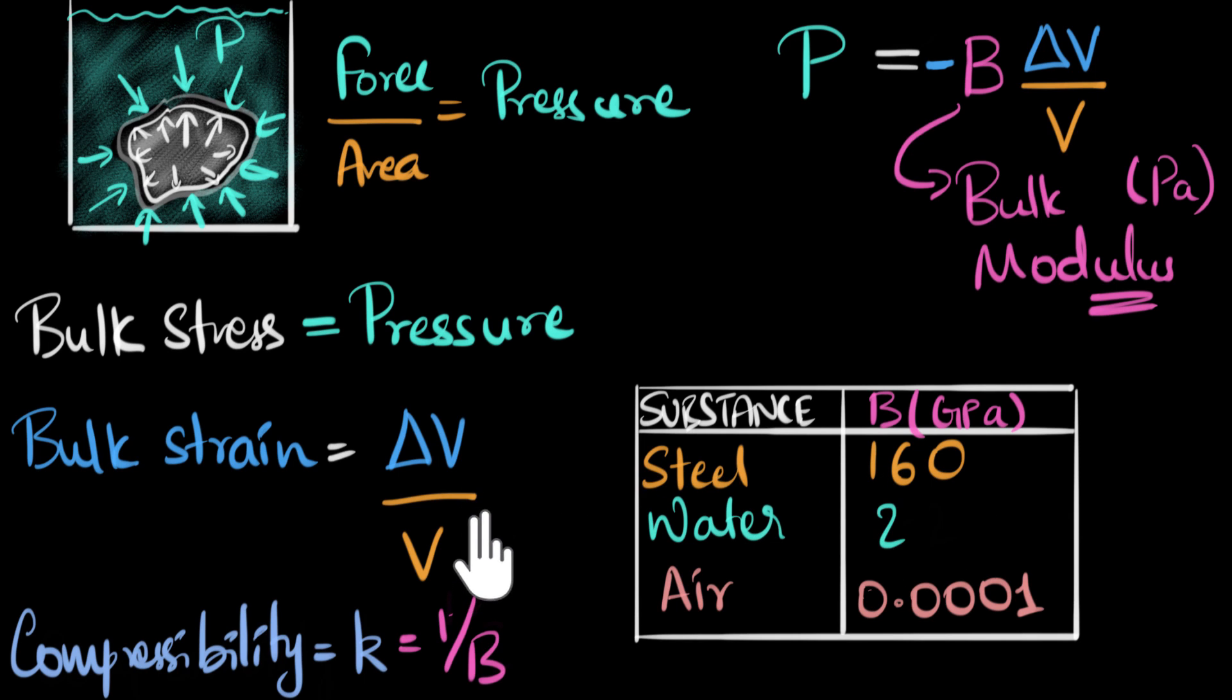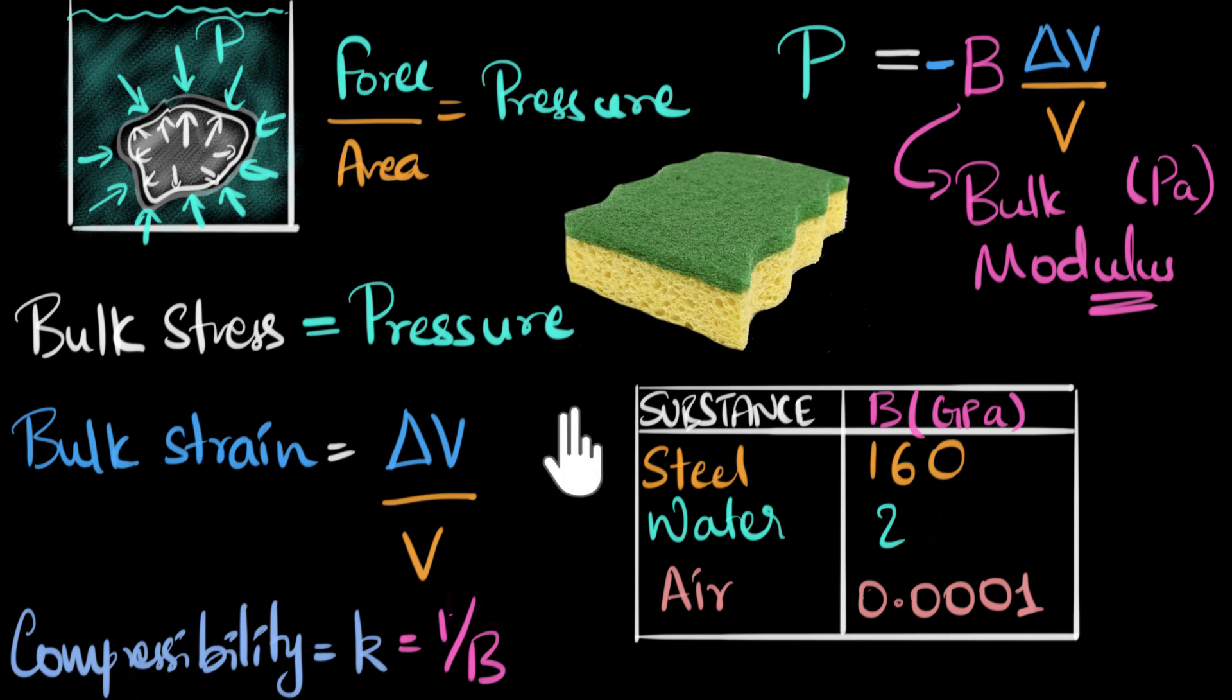Now, one material that usually pops to my head when we talk about bulk stress and compressing is sponge, right? I mean, think about it. Sponge, they are very easily compressible, and yet they are solids. Solids usually have a high bulk modulus or low compressibility, but sponge is an exception, right? I mean, it's a solid, and yet it can be easily compressed, so it has a very high compressibility. Why do you think that is? Well, it turns out that sponge has a lot of holes, so it has a lot of air pockets in between, and it's because air is highly compressible, this whole sponge ends up being highly compressible. So the reason for that is it has a lot of trapped air inside.